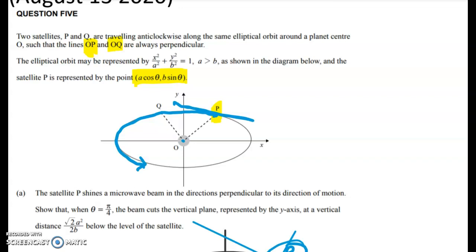And we have to show that when theta is a particular value, the beam cuts the vertical plane, which is represented by the y-axis, at this vertical distance below the level of the satellite.